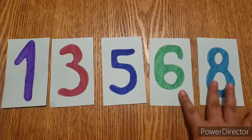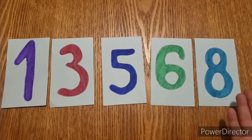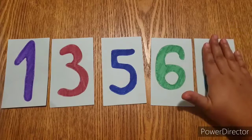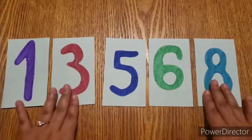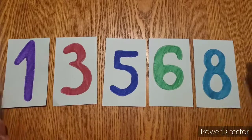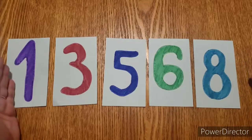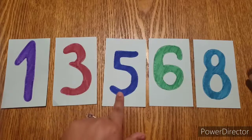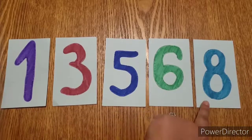Now if we look at these 2, we have 6 and 8. Which one is greater? 8. So this one stays here. And this would be the order for least to greatest. We have 1, 3, 5, 6, and 8.